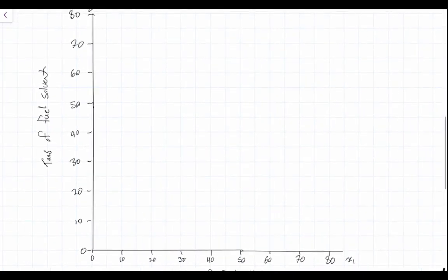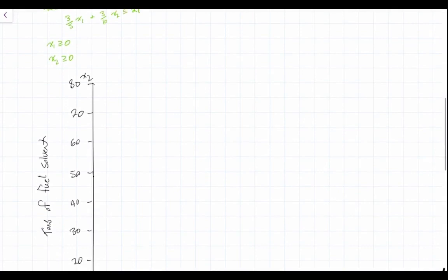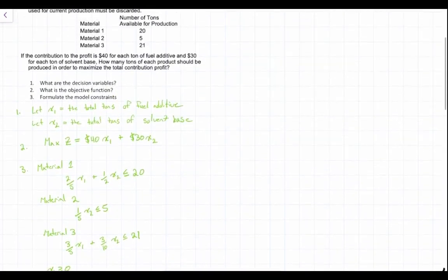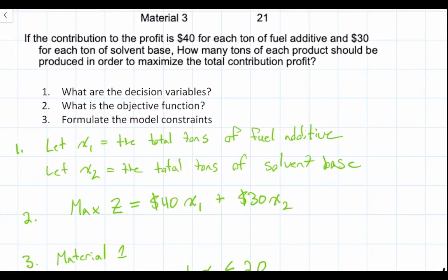I have already created my graph with x1 and x2 coordinates. On the x1 axis you'll see that I've labeled it — we have tons of fuel additive along the x-axis. Along what is typically the y-axis, I've labeled this x2, and this is our tons of fuel solvent. We know that because in the previous video we let x1 equal the total tons of fuel additive and x2 equal the total tons of solvent base.